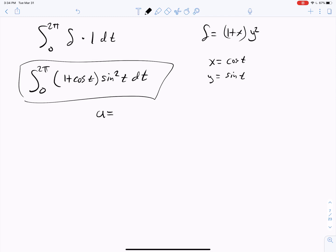And this problem to me looks like maybe a u substitution. If u equals sine t, then du would equal cosine t dt.